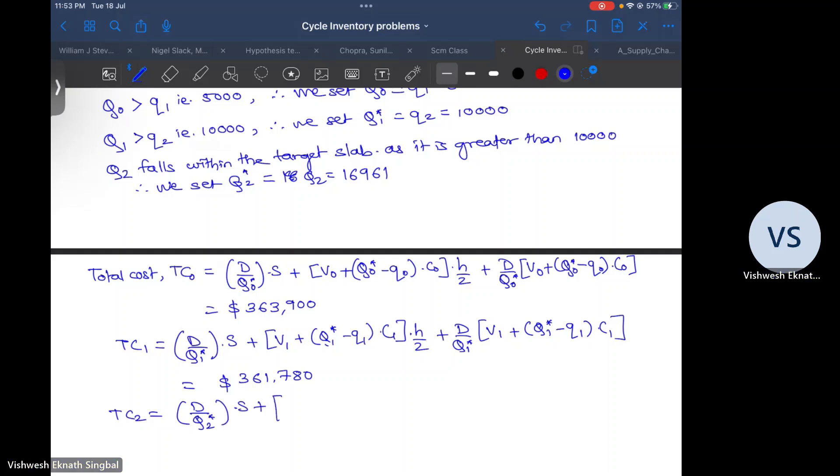Likewise, TC2 will be D by q2 star S plus v2 plus q2 star minus q2 into c2 h by 2 plus D by q2 star into v2 plus q2 star minus q2 into c2. Once you substitute for all the variables, the final cost that you will get is $359,600.